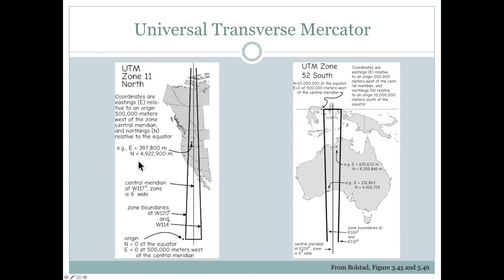We can see what the x and y coordinates look like here. The easting for this point would be about 397,000 meters, because these zones are approximately 500,000 meters apart, but we move the zero point from right on the central line out to a false origin location. From that origin, we increase easting moving east and increase northing moving north — so this point is 4,922,900 meters north and 397,800 meters east.